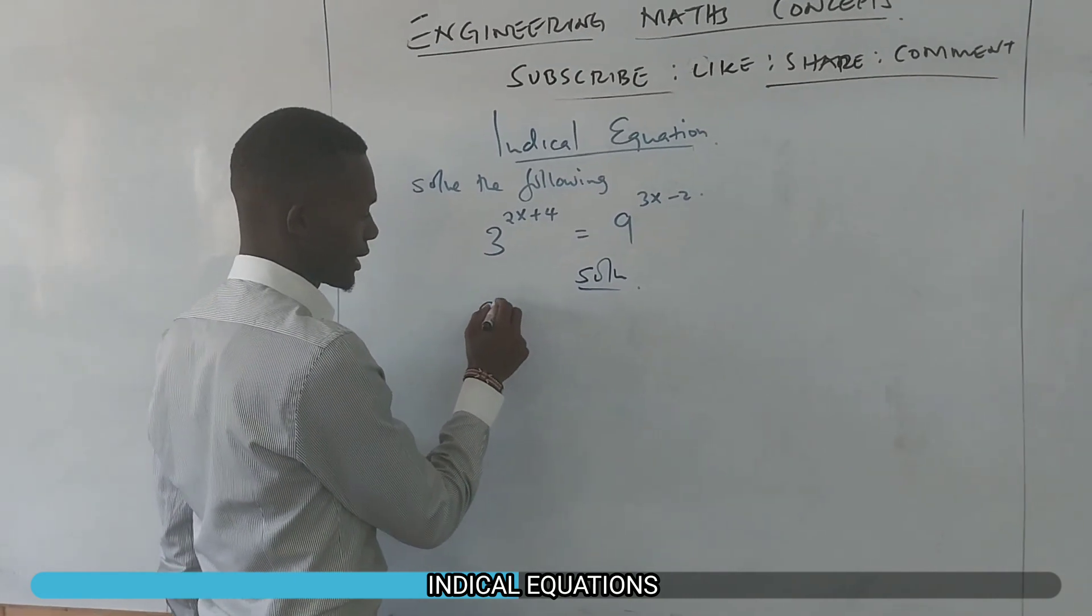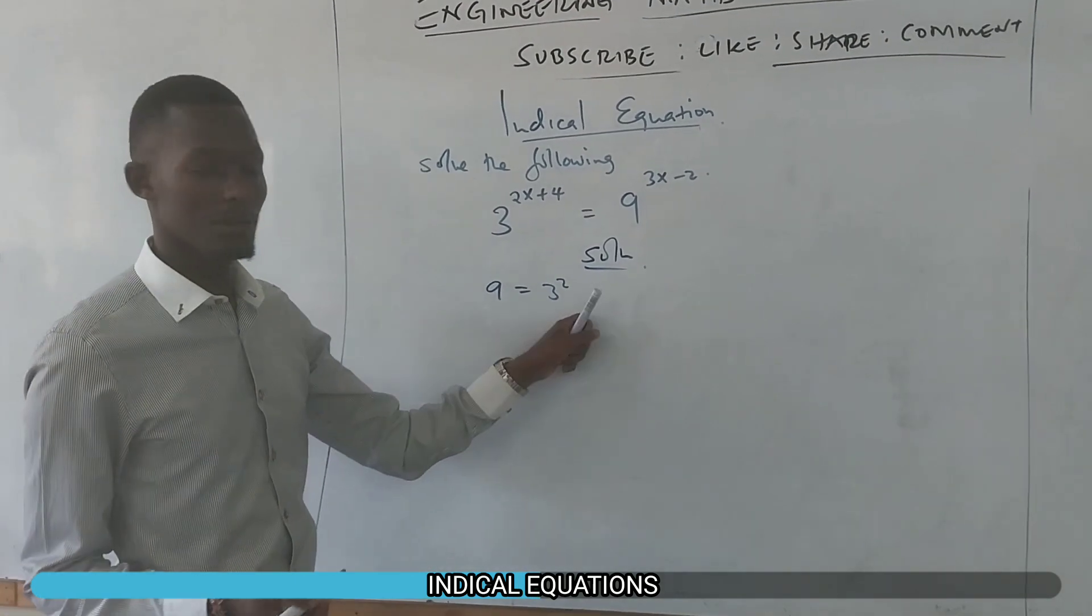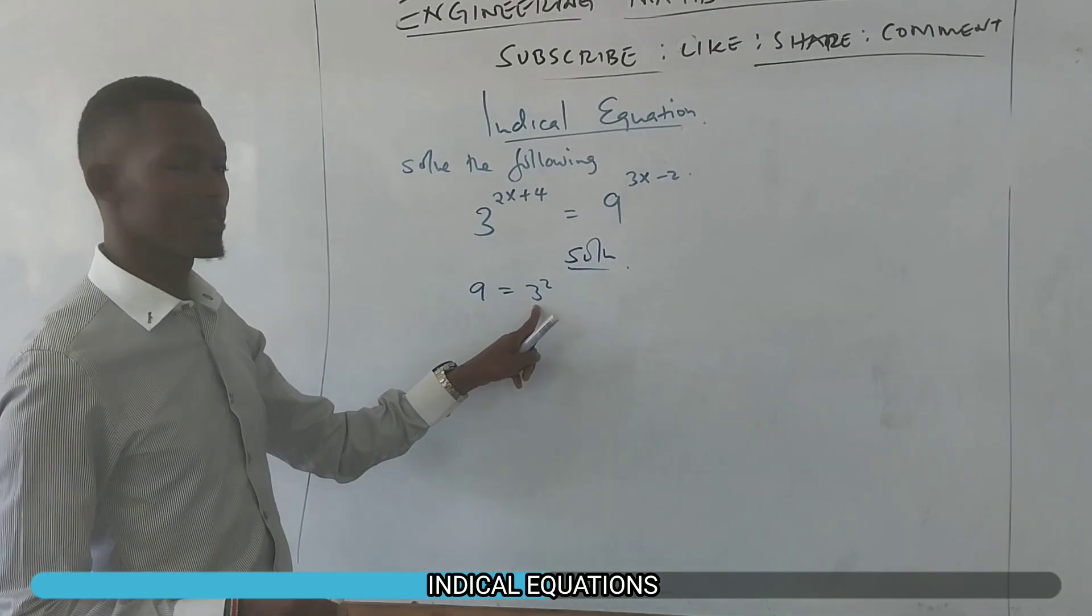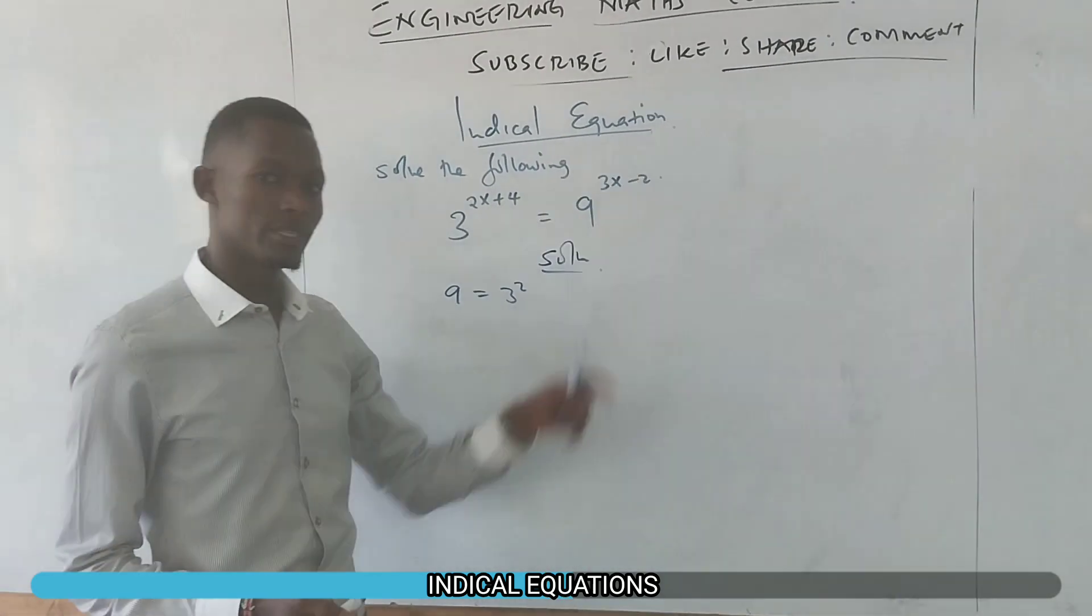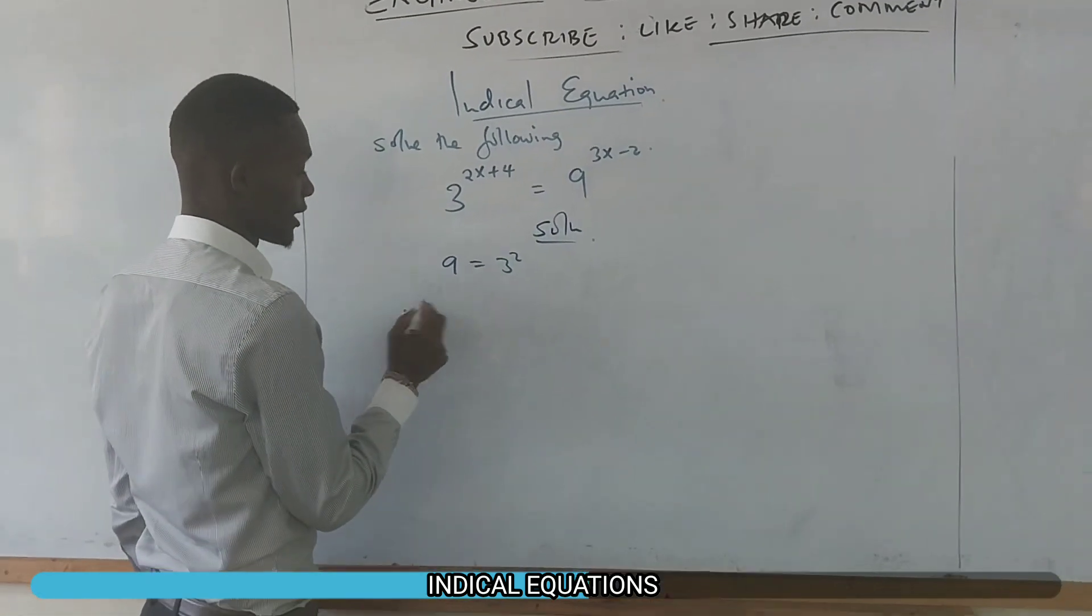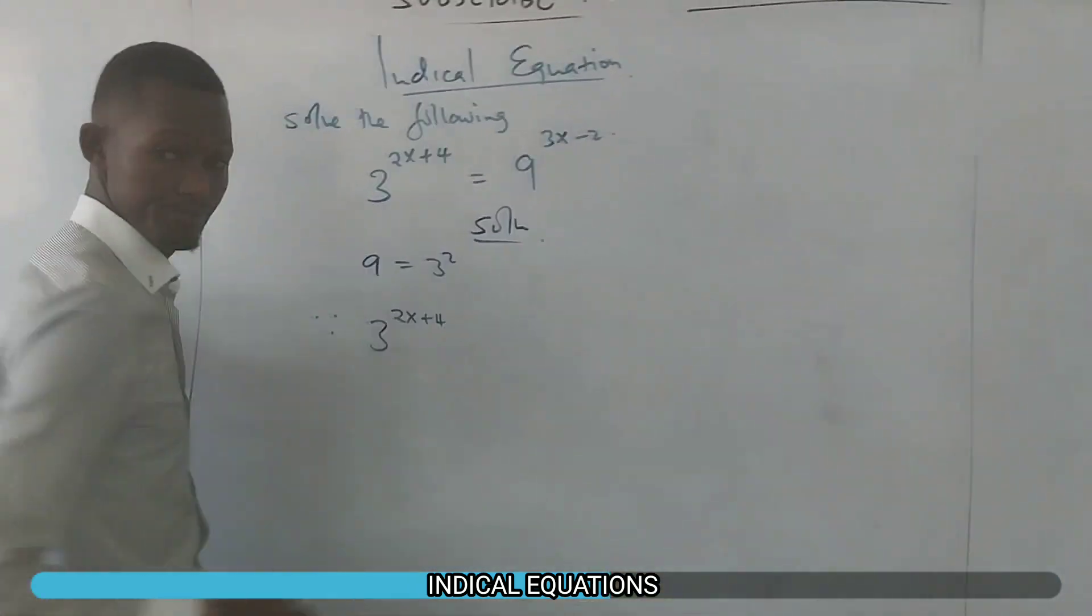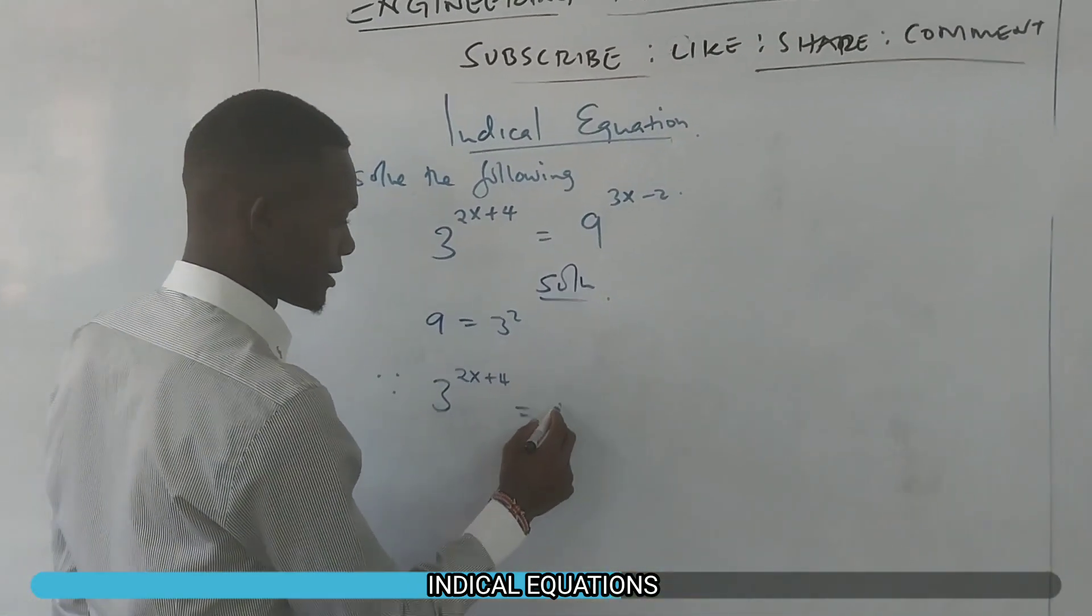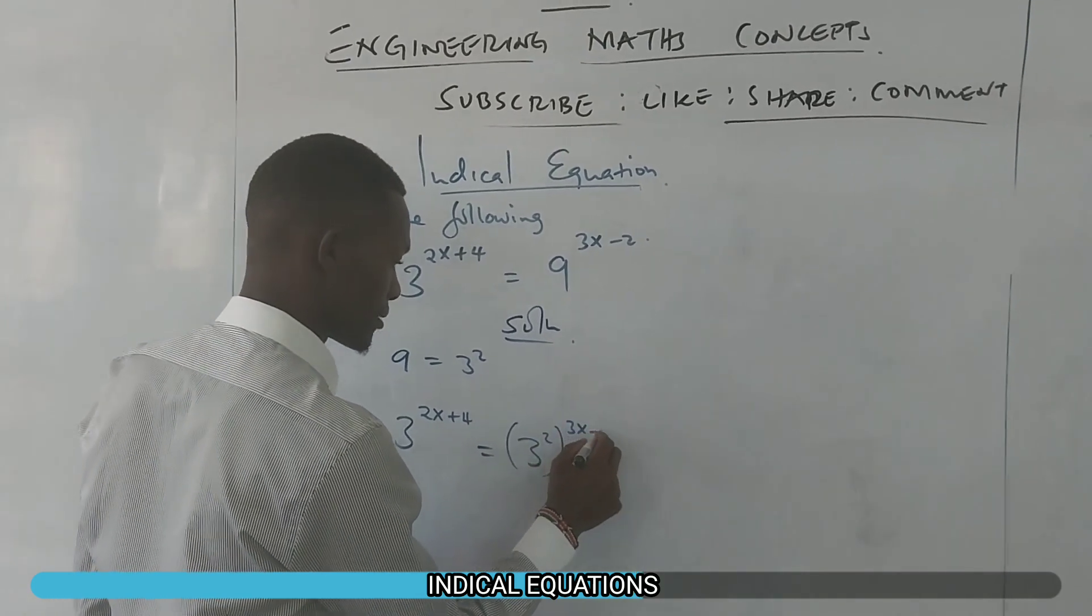We know 9 is the same as 3 squared. So this is the same as this. So now we can replace our 3 squared so that we can make the base on the left hand side to be the same as the base on the right hand side. So therefore we shall have 3^(2x+4). Then we have 3. So we can put the square there. Then we have 3x minus 2.